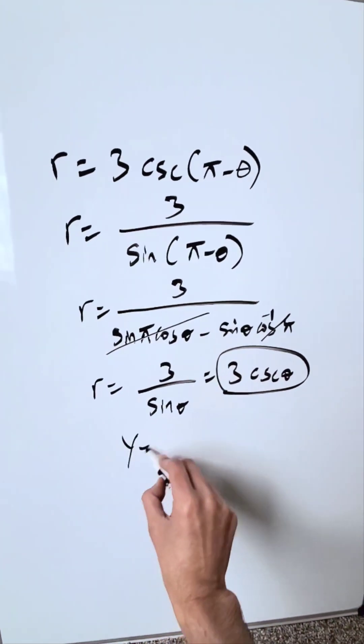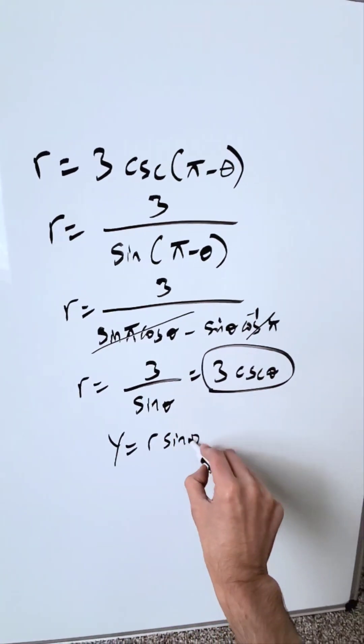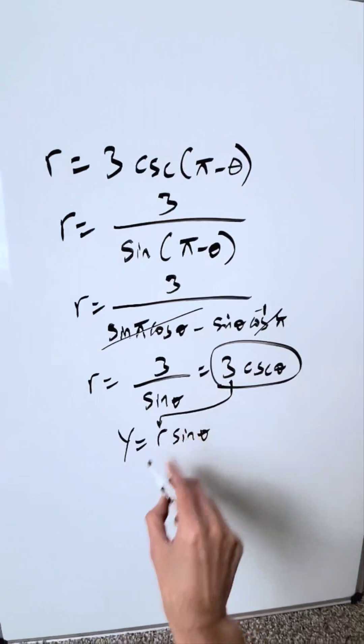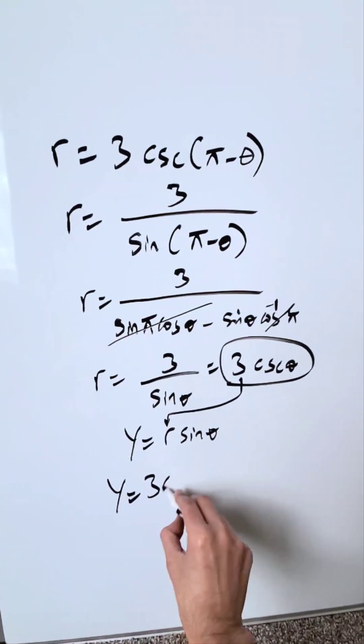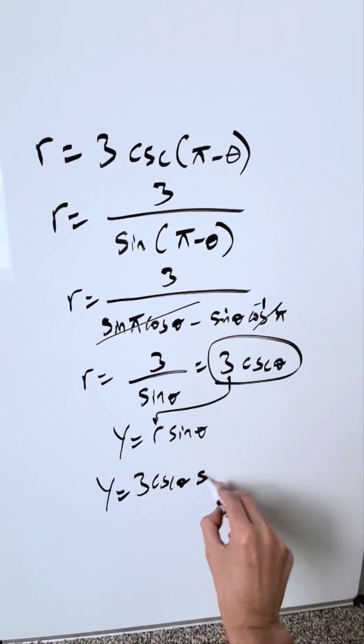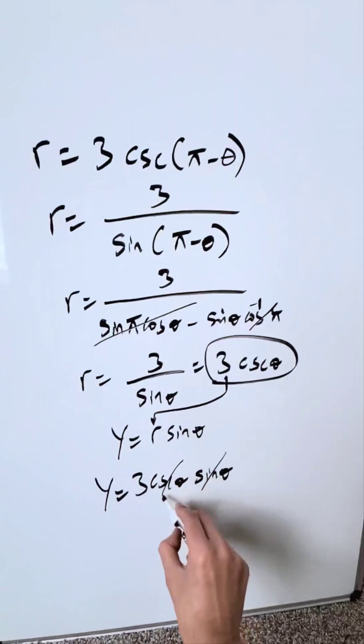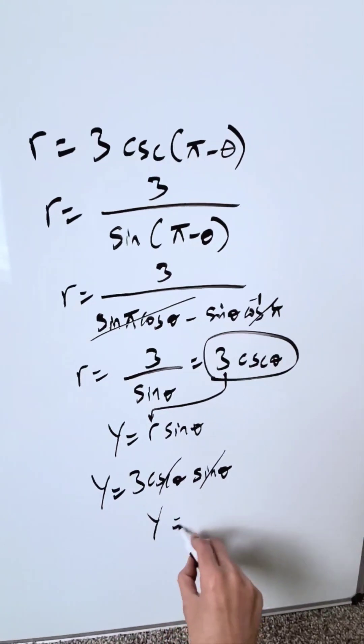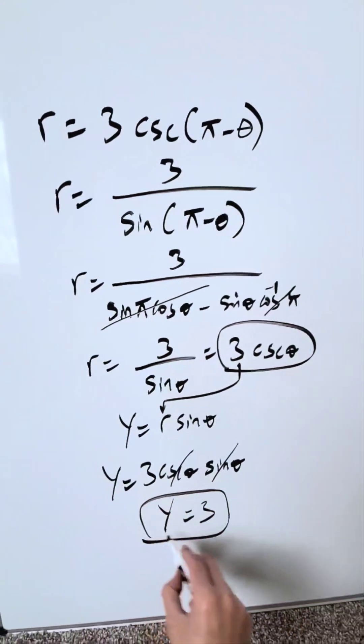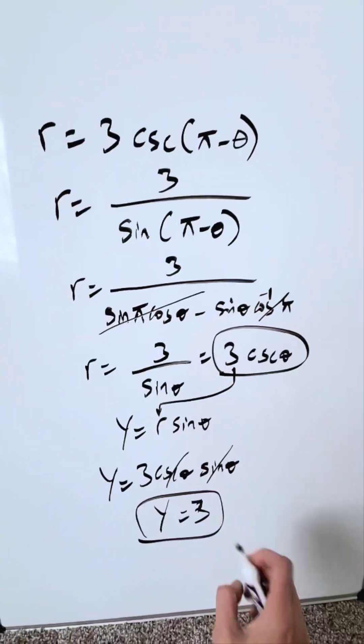equal to this. We know from parametrics y equals r sine theta. We will just substitute this right over here. We have y equals 3 cosecant theta times sine theta. Reciprocal functions will cancel each other out. Our Cartesian equation is y equals 3, a horizontal line, and that is our answer.